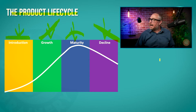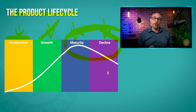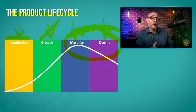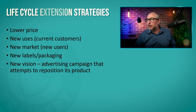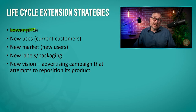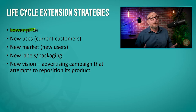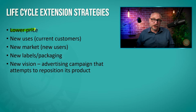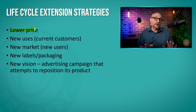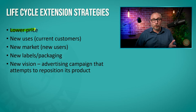What happens if you have a product that is starting to go into maturity or even decline? There are a few things you can do. You can lower your prices. Maybe after all this time you've figured out some economies of scale and you can introduce new efficiencies to the production process so that you can lower the price but still make your profit margins.